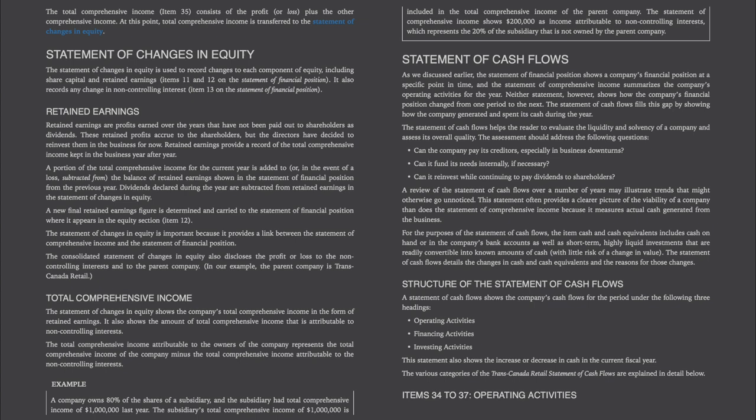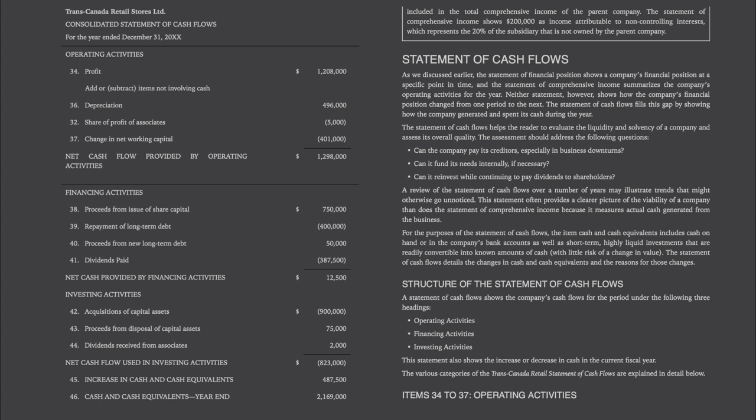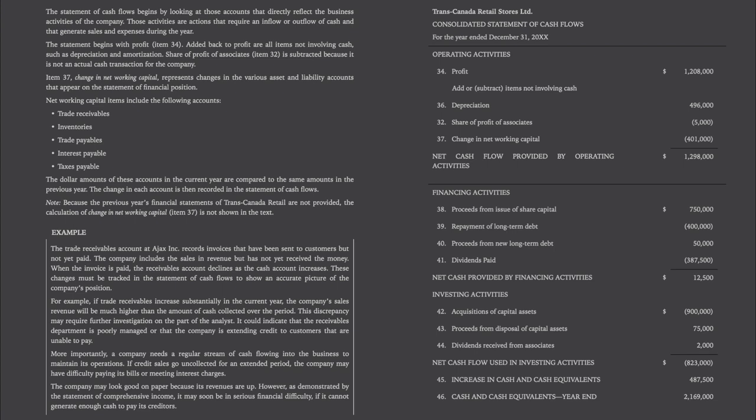Structure of the Statement of Cash Flows. A statement of cash flows shows the company's cash flows for the period under three headings: operating activities, financing activities, and investing activities. This statement also shows the increase or decrease in cash in the current fiscal year. Items 34 to 37, operating activities. The statement of cash flows begins by looking at those accounts that directly reflect the business activities of the company — actions that require an inflow or outflow of cash that generate sales and expenses during the year. The statement begins with profit (item 34). Added back to profit are all items not involving cash, such as depreciation and amortization. Share of profit of associates (item 32) is subtracted because it is not an actual cash transaction for the company. Item 37, change in net working capital, represents changes in the various asset and liability accounts that appear on the statement of financial position.